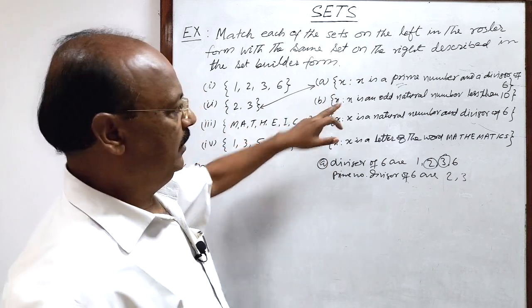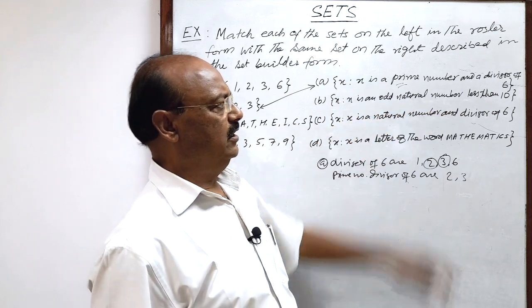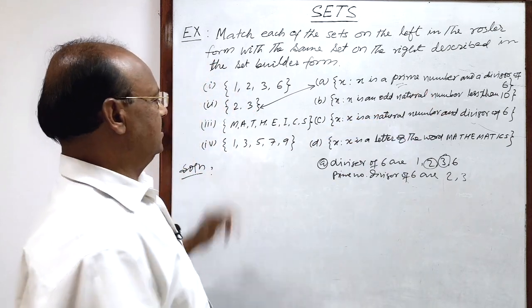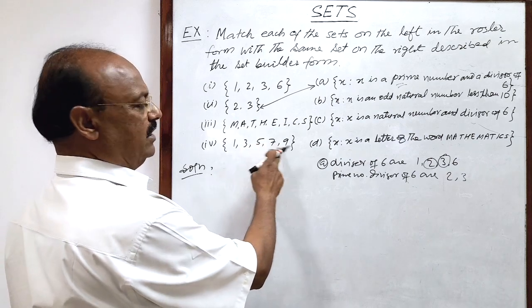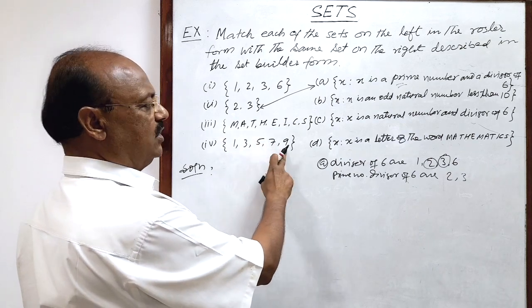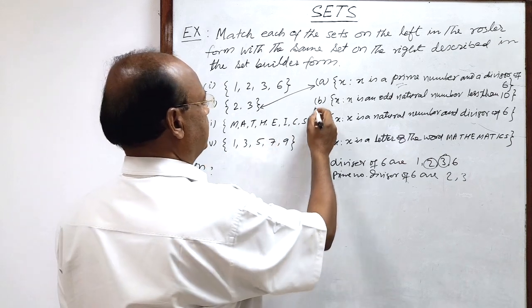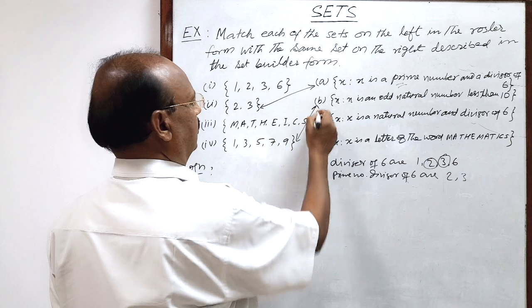Similarly, B x is an odd natural number less than 10. So this is very obvious 1, 3, 5, 7, 9 these are odd natural numbers less than 10. So this fourth set matches with B.